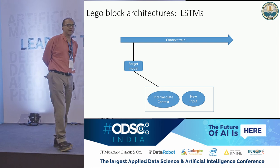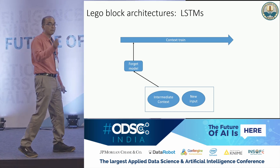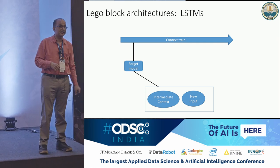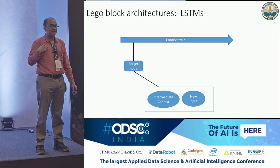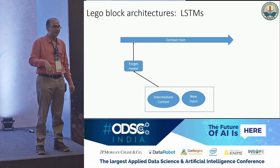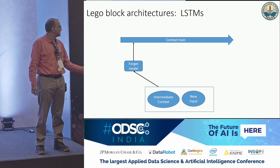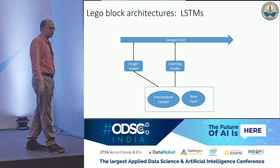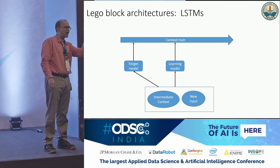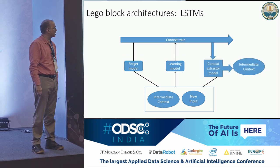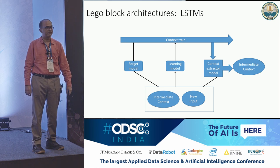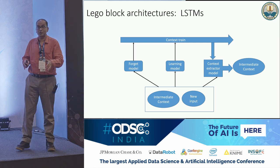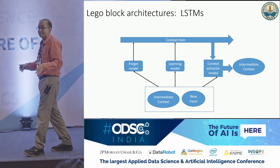Forgetting seems very important — let me build a neural net that specializes in forgetting. Then another model: obviously I'm learning with every input, but what I learn is different from what you learn because our contexts are different. Let me have one more neural net figure out what to learn. Then I know many things but to solve a problem I only extract a small part — let me have one more neural net figure out what to extract. That's the intermediate context, and that's it. A Lego block as opposed to manually sitting and writing thousands of features.